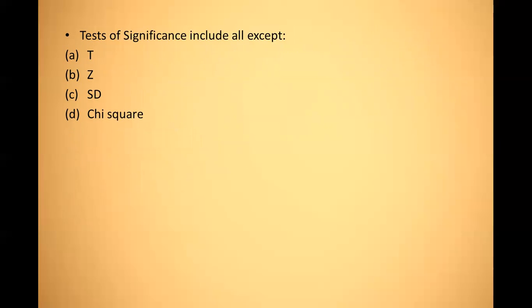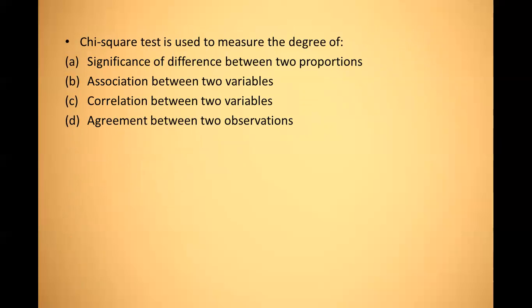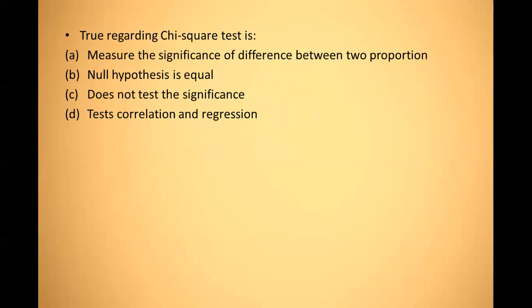Tests of significance include all EXCEPT: t, z, standard deviation, and chi-square — the answer is standard deviation. Next: the chi-square test is used to measure the degree of significance of difference between two proportions, association between two variables, correlation, or agreement — the answer is significance of difference between two proportions. Which is true regarding chi-square test? It measures the significance of difference between two proportions — that is the correct first option.